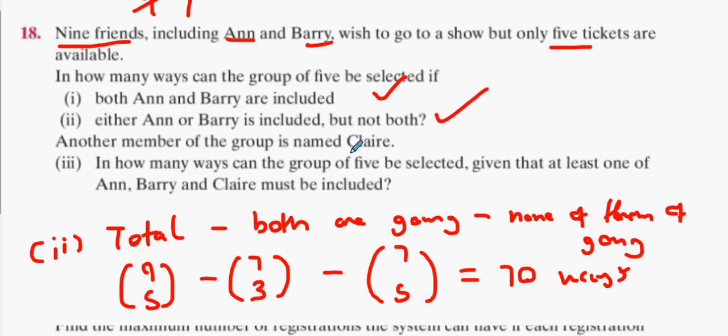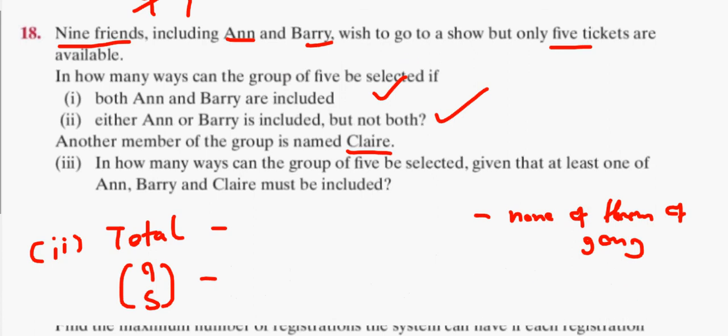Another member of the group is called Claire. In how many ways can the group of five be selected, given that at least one of Ann, Barry and Claire must be included? I take it we're still on nine members. It's just that we know what the new member is called. Okay. I'm going to stick with my current system. At least one of them must be included. Well, why don't I just do total take away none of them are going.